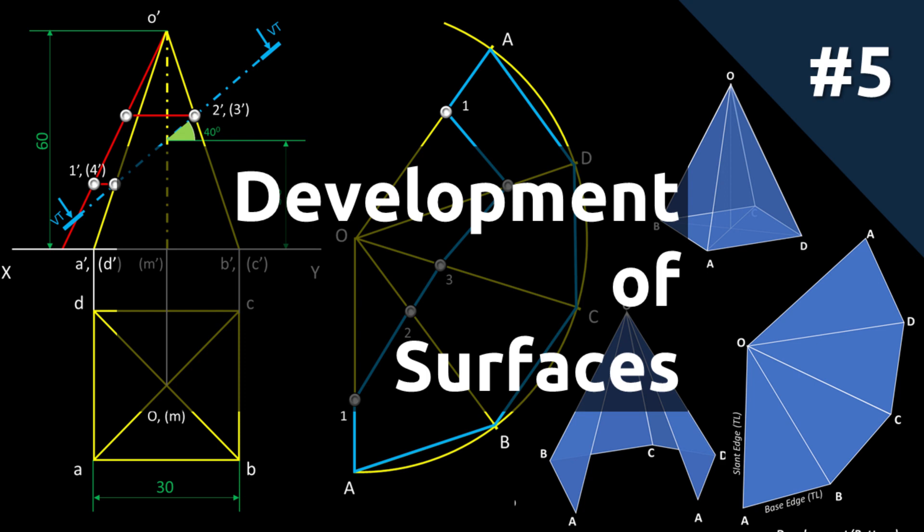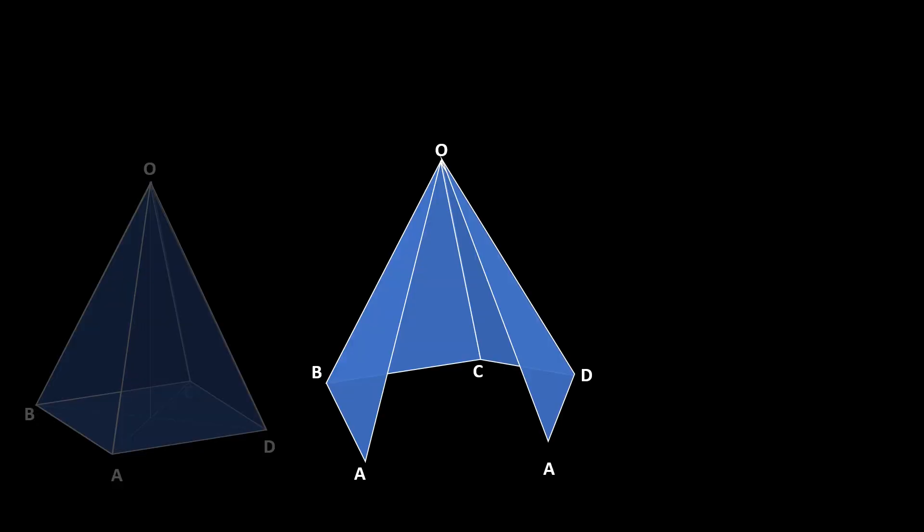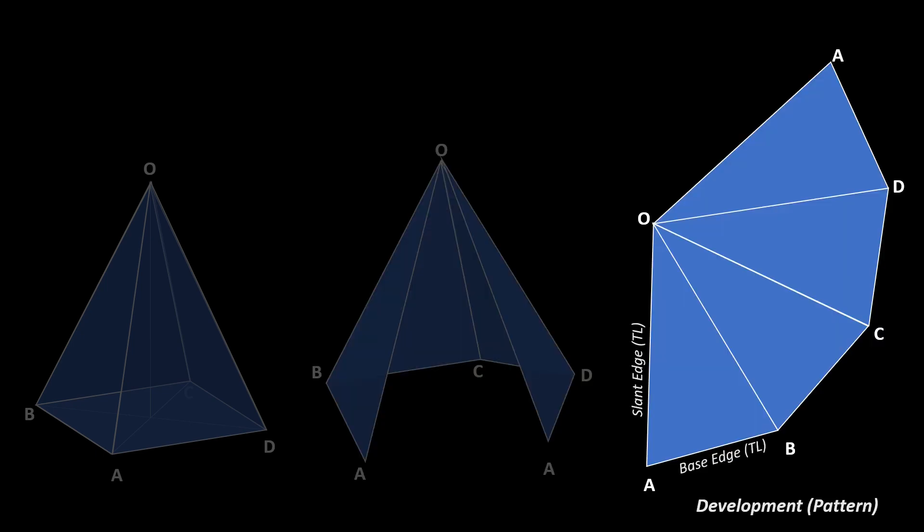Hello all, welcome to the session on development of a pyramid. Imagine a square pyramid with base corners A, B, C, and D, and apex O. While developing the pyramid from a slanted edge OA, we will get the final pattern like this. All the edges will be in true length, and we can get those true lengths from the orthographic views.